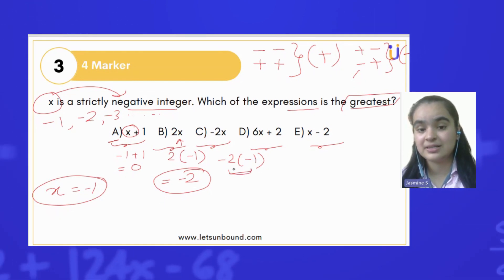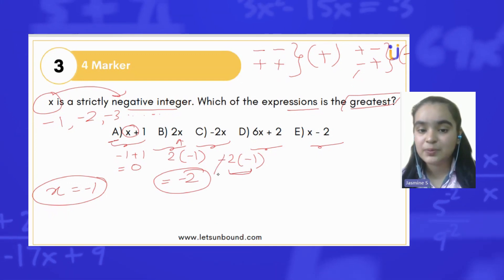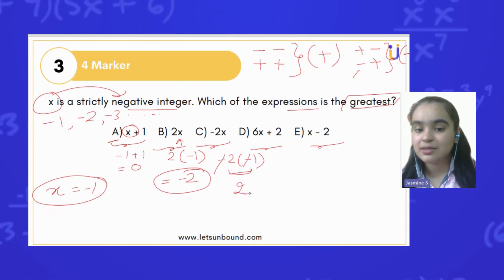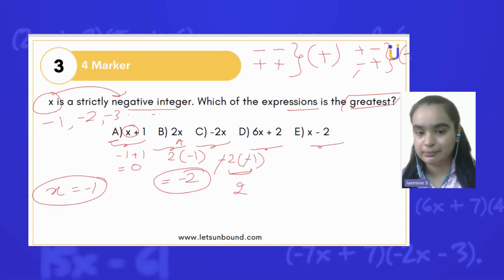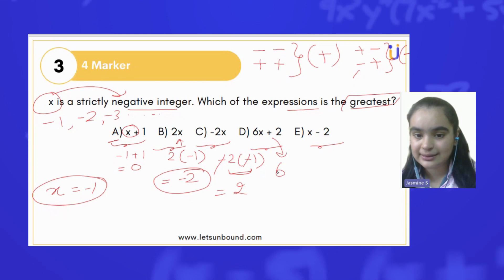Both the numbers are negative, so we can easily cancel the signs and the answer will be 2, because 2 times 1 is 2. Let's check the next one: 6 times -1 + 2 is going to be -4.